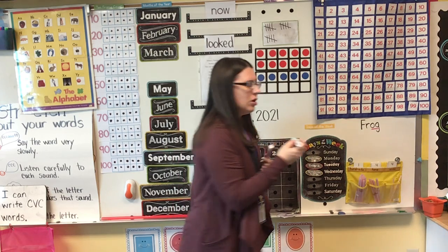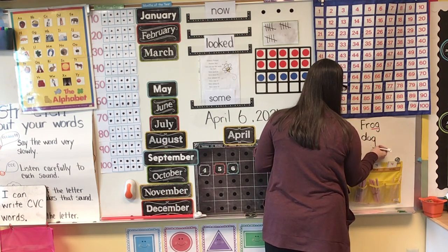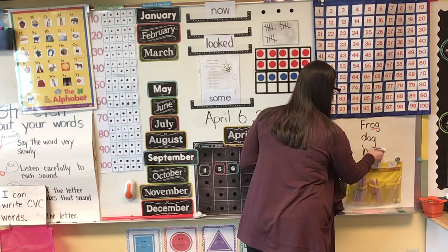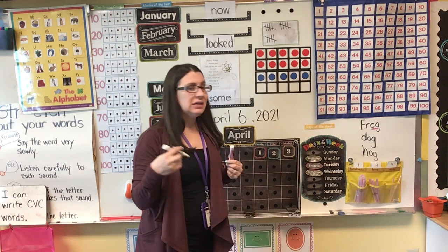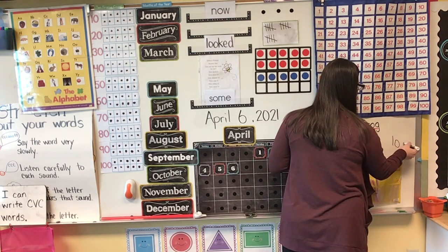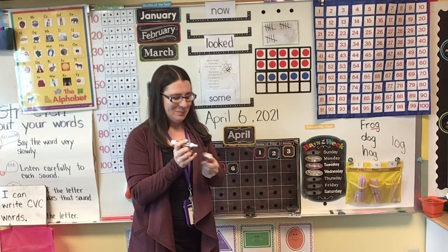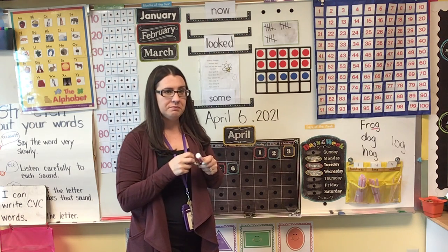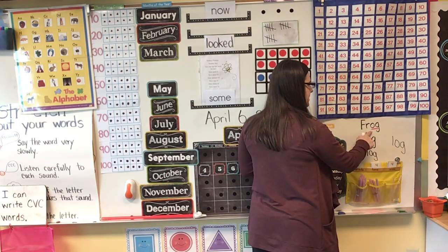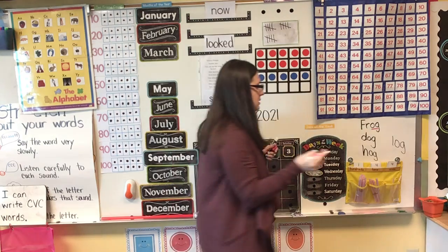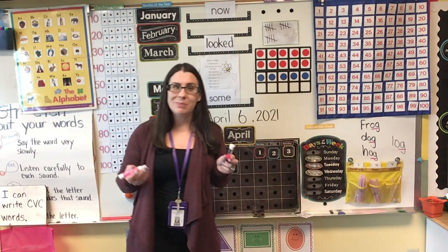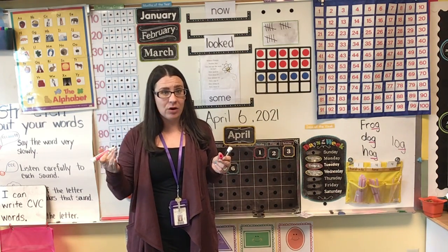Some words that I thought of were dog. Did anybody think of that one? What about hog, like a pig? Hog. What's another one? Frog, dog, hog — a log. Now let's look at these words I just wrote up here. What do you notice about those words? They all end the same, don't they? Frog has 'og' at the end, which makes the 'og' sound. Dog has the same thing. Hog and log. That's because those words rhyme — they have that same sound at the end.